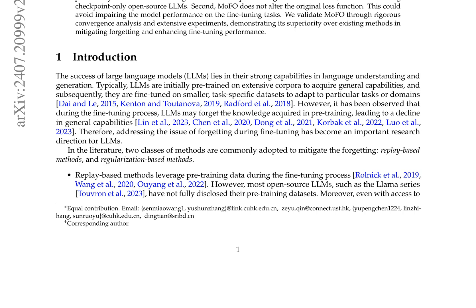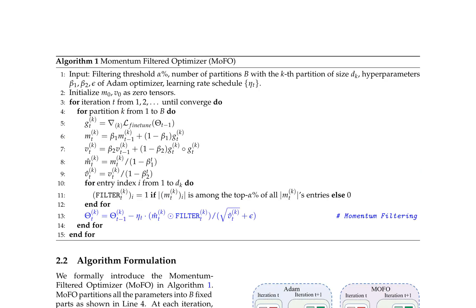The authors propose the MoFo algorithm as a new optimization method designed to mitigate the forgetting of pre-training knowledge during the fine-tuning process. They present an initial convergence analysis of the MoFo algorithm and conduct experiments on various tasks, demonstrating that MoFo outperforms existing methods in both fine-tuning performance and mitigating forgetting, without requiring access to pre-training data or altering the original loss function.